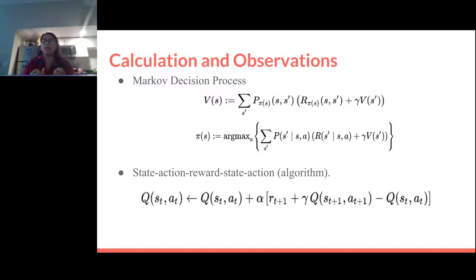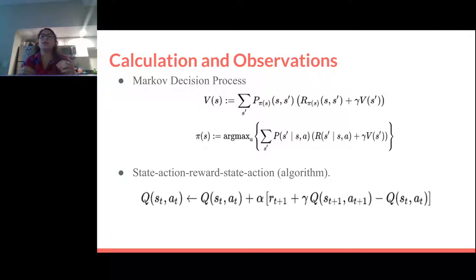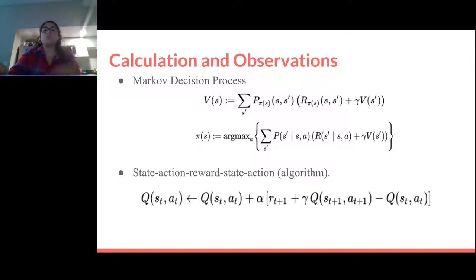They use a Markov Decision Process, which states that the next step depends on the current state and the decision taken at that moment. The state-action algorithm is derived from this process, with dependent and independent variables all interconnected. Markov based his research on Bernoulli's equation, which refers to what is the most probable thing that will happen where probabilities are compared as larger numbers.